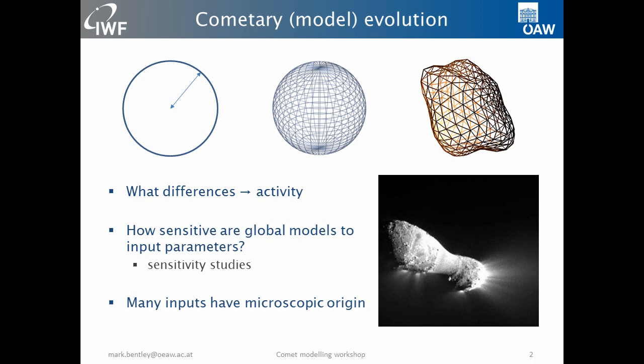Clearly our models have got more complex — 1D, 2D, 3D, and so on. We model more lateral heat flow and topography, shadowing, and so on. But still the question remains: how sensitive are these models to some of the inputs that go in? Many of the inputs are not so well constrained by the data we have to date, and many of these inputs that we can measure on a global scale actually have a microscopic origin, so probably they vary considerably over and under the surface.